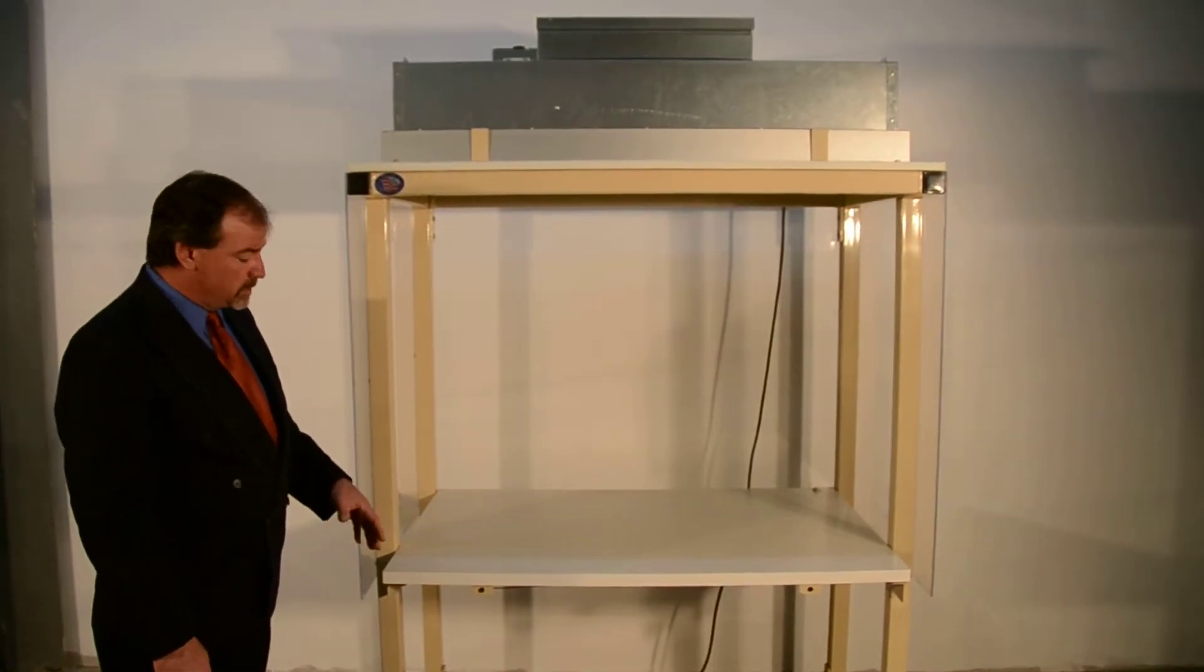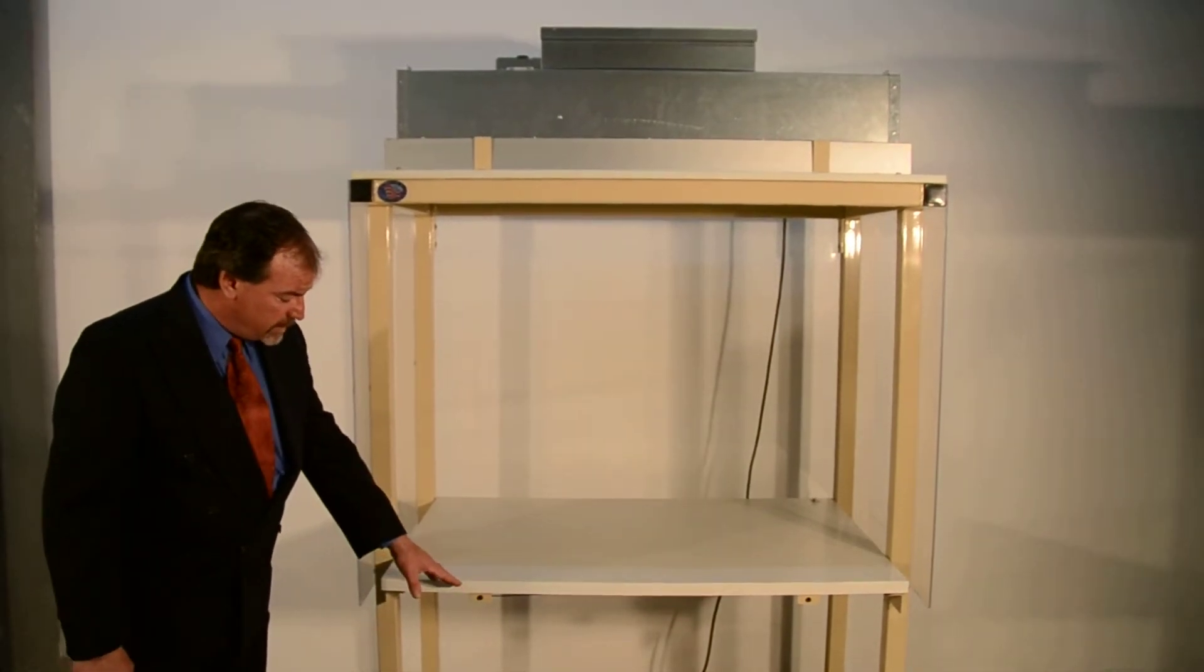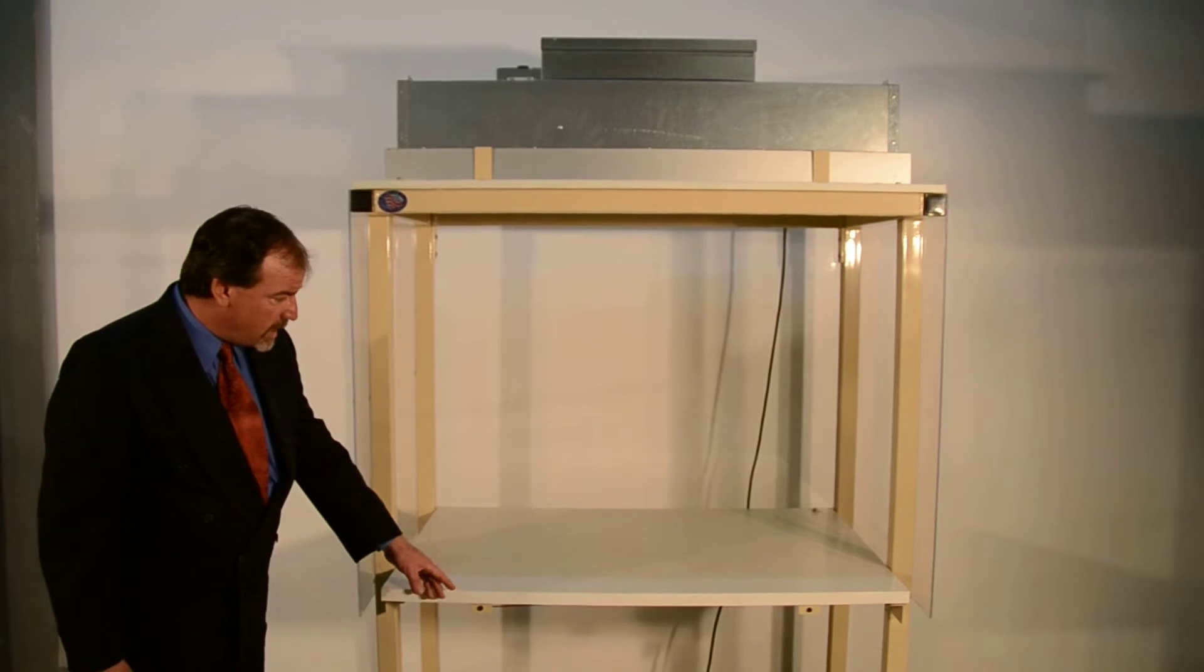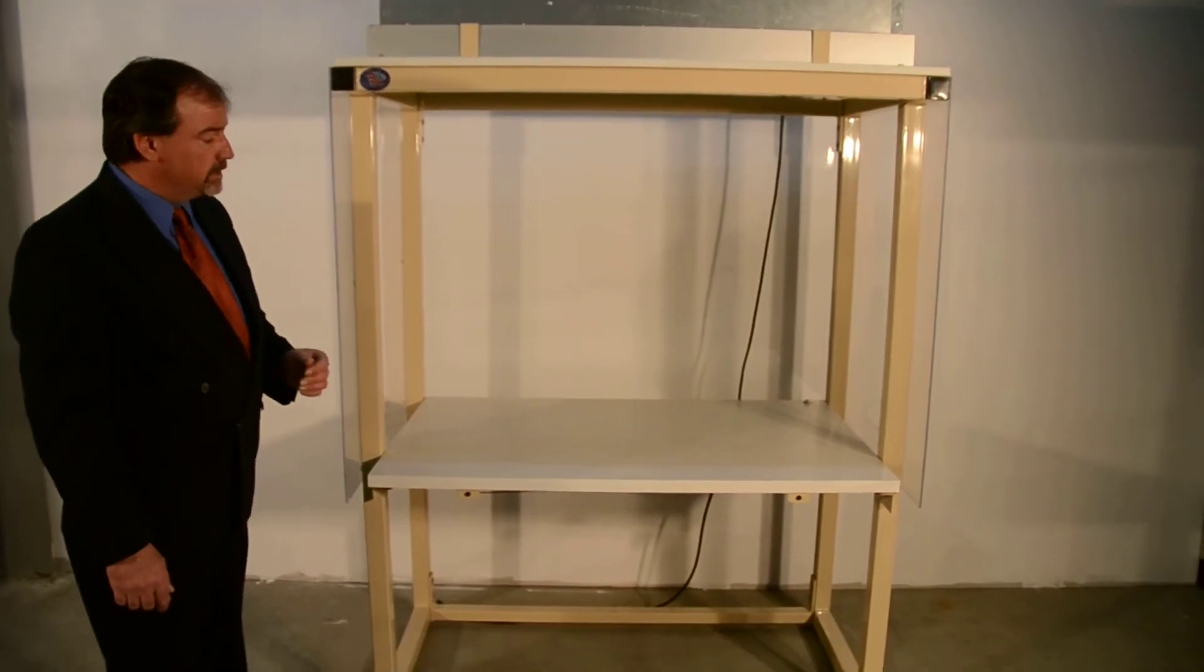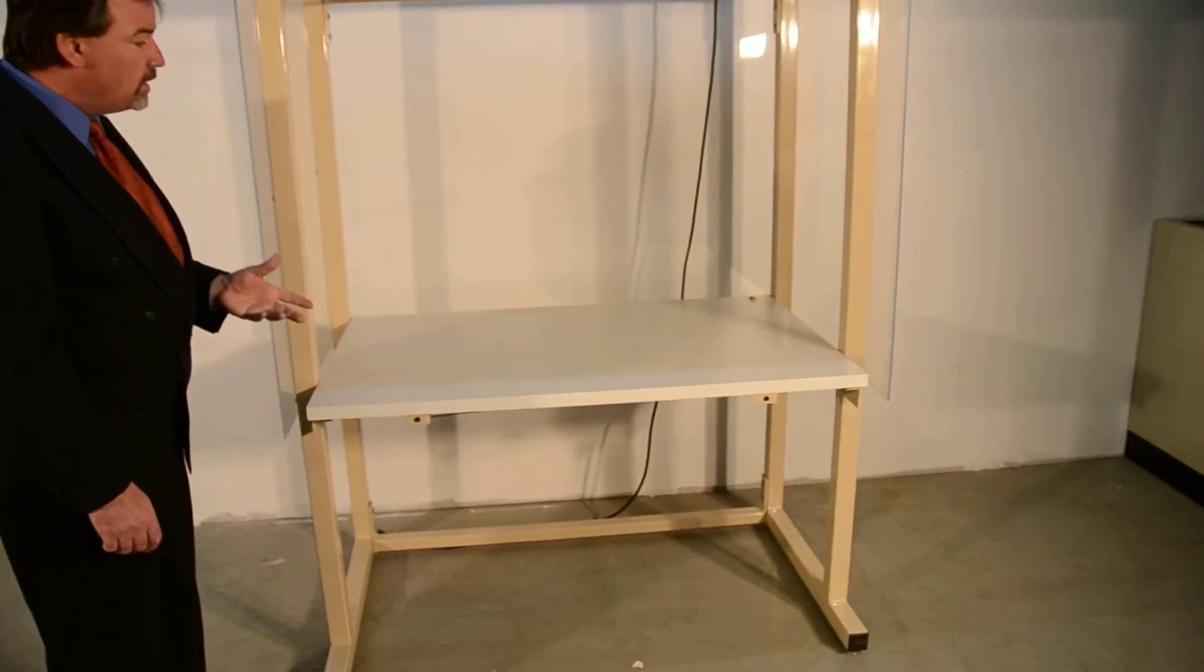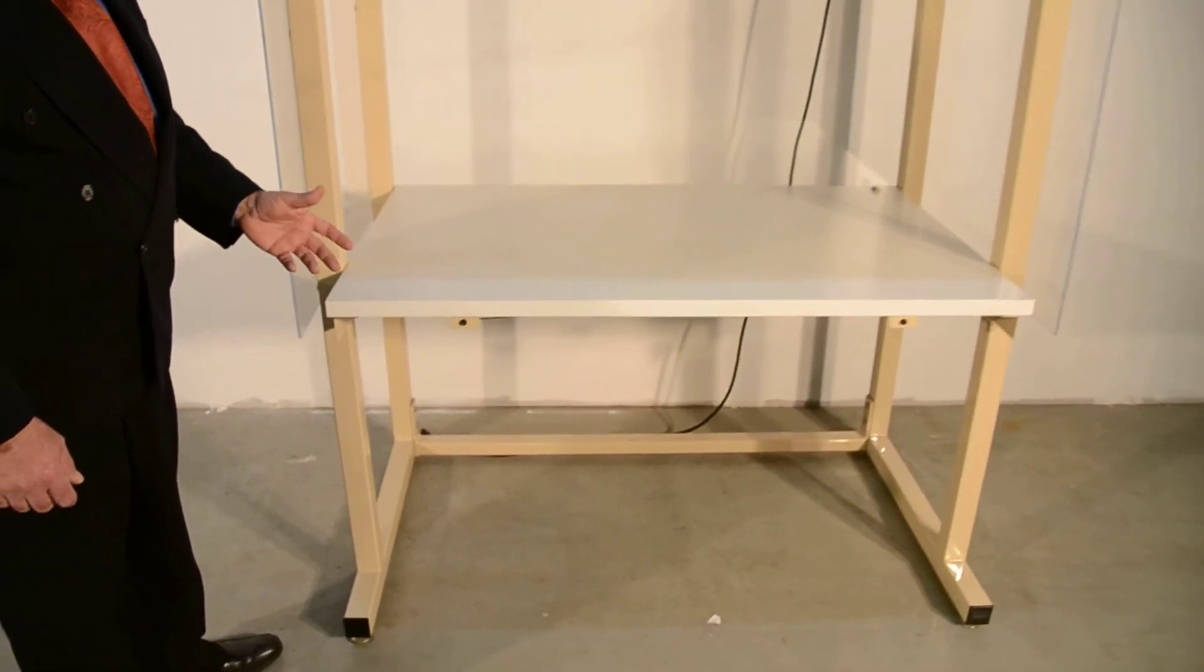In this particular model, we're also showing our ESD laminate work surface with grounding kit that includes a banana jack, the ground kit and lug, and then a wire that runs out to building ground. The reason that's important is you don't want any static electricity where the dust might collect onto anything.